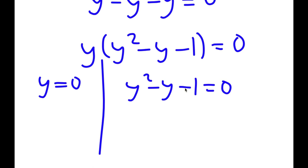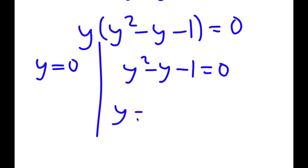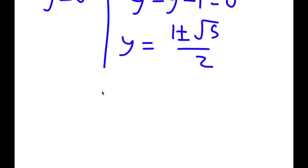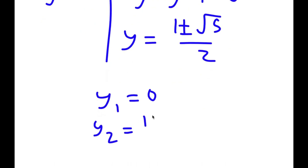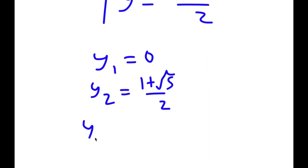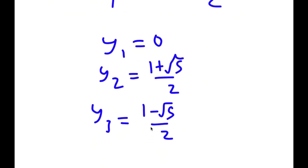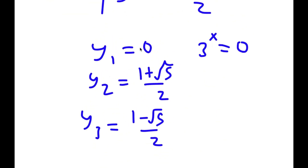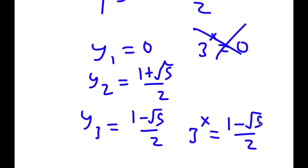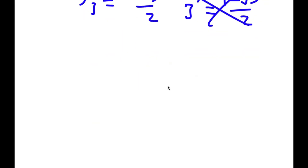This gives two equations: y equals 0, and y squared minus y minus 1 equals 0. Using the quadratic formula on the second equation, I get y is equal to 1 plus or minus the square root of 5 over 2. Now, 3 to the power of x equals 0 is impossible — you can't raise a number to a power and get 0. And 1 minus the square root of 5 is negative, so that's also invalid. So I'm left with 3 to the power of x equals 1 plus the square root of 5 over 2.